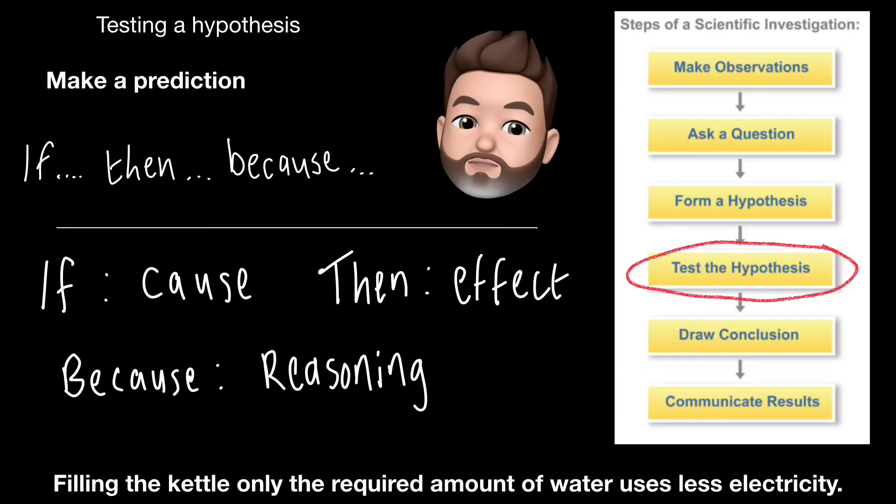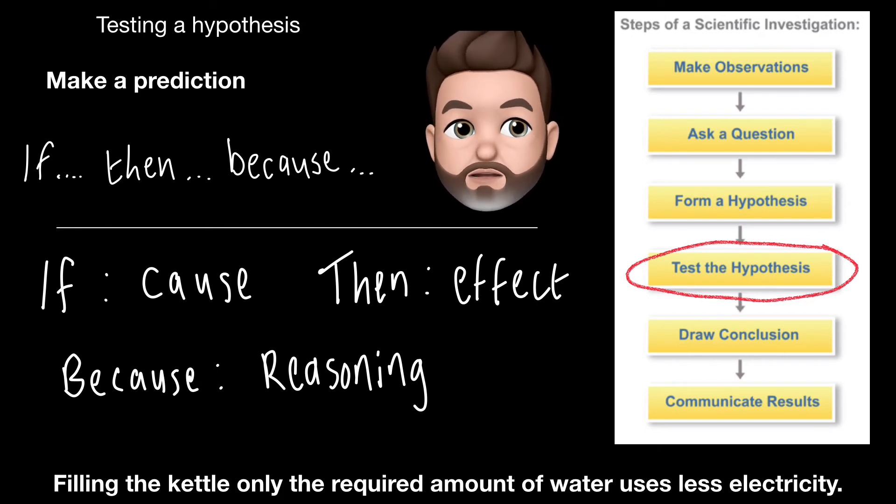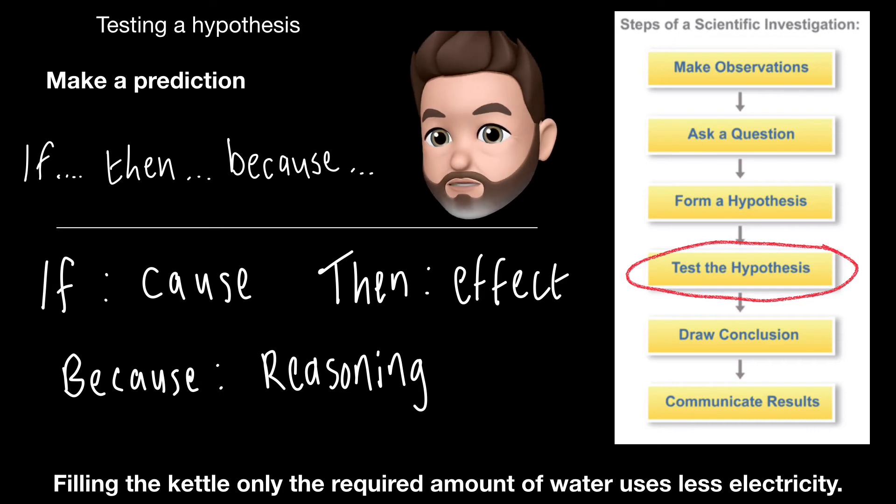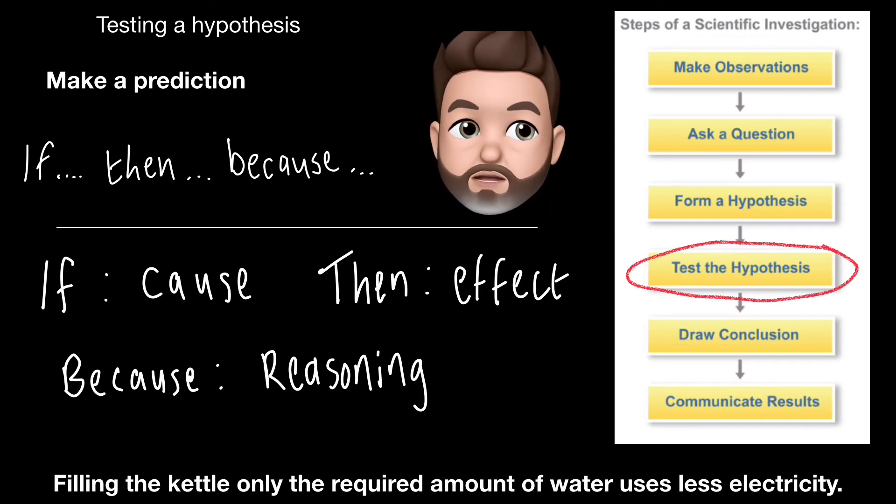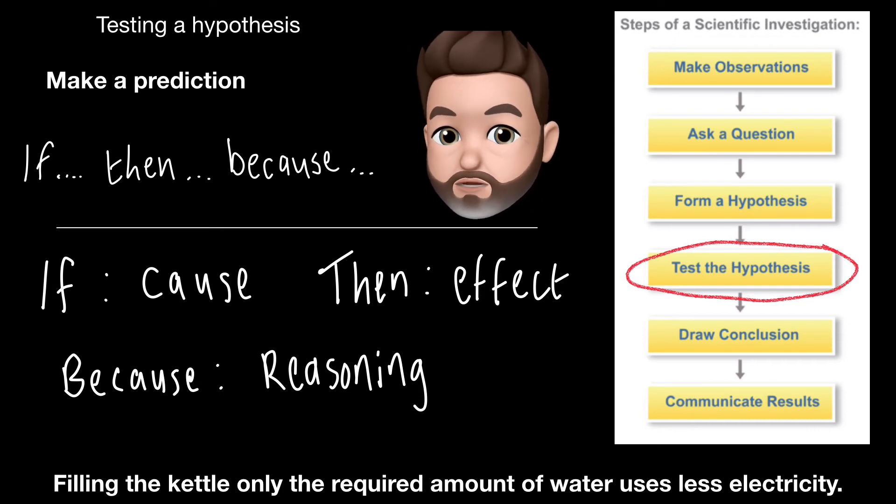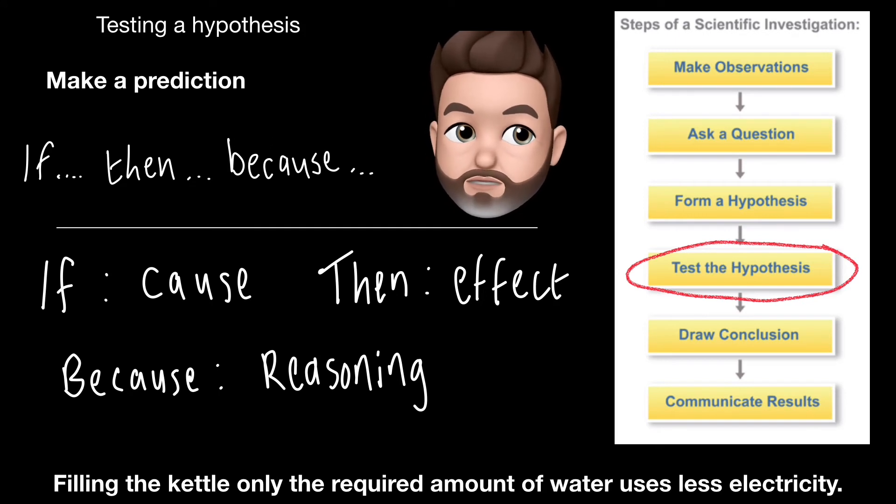So where this all comes together is when you actually start to test your hypothesis. And to test your hypothesis, you need to make a prediction. Now you need to turn your hypothesis into a prediction by including the words if, then, because. If is the cause, then is the effect, and your because is your reasoning behind that.